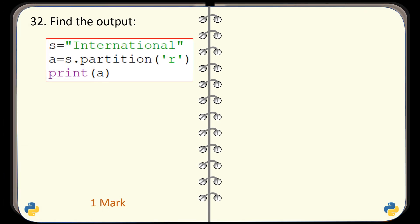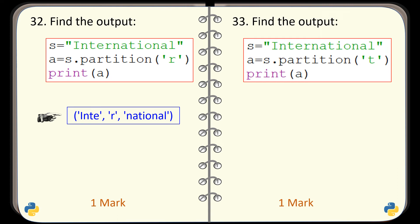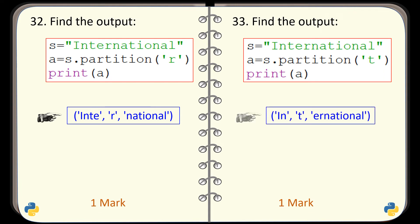Question number 32. Again, code is given and you have to find the output. And here is the correct output. Question number 33. Find the output generated by this code. This is the correct output.